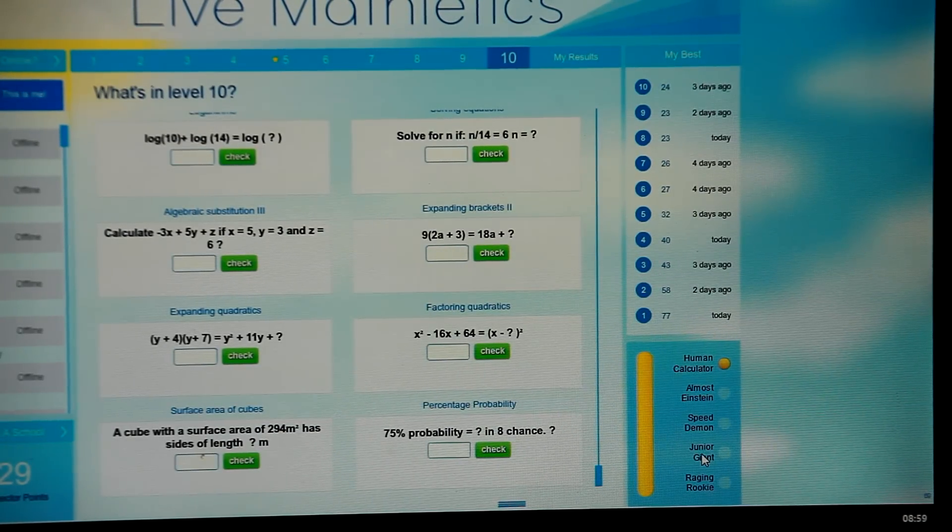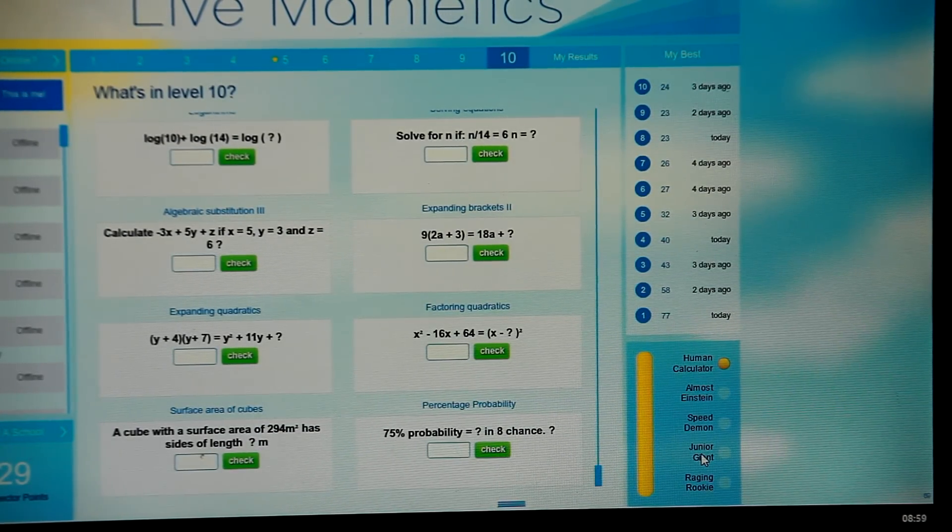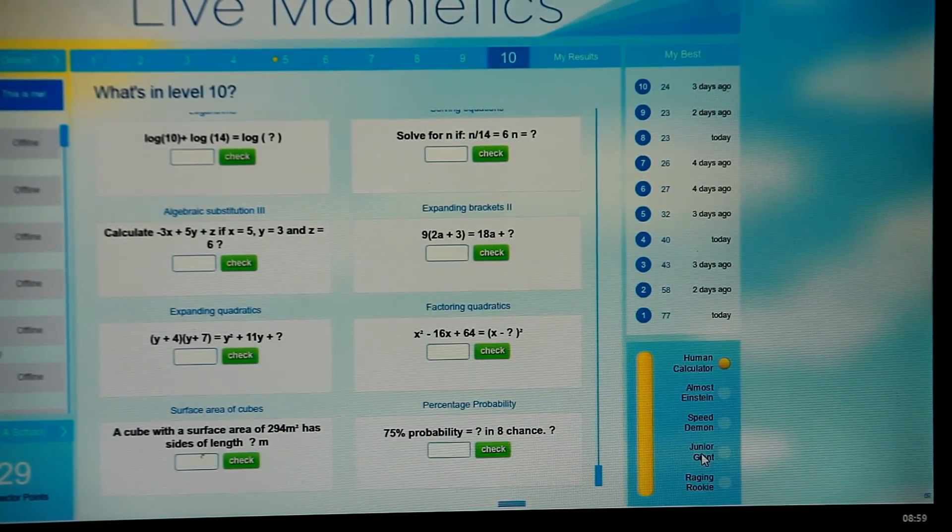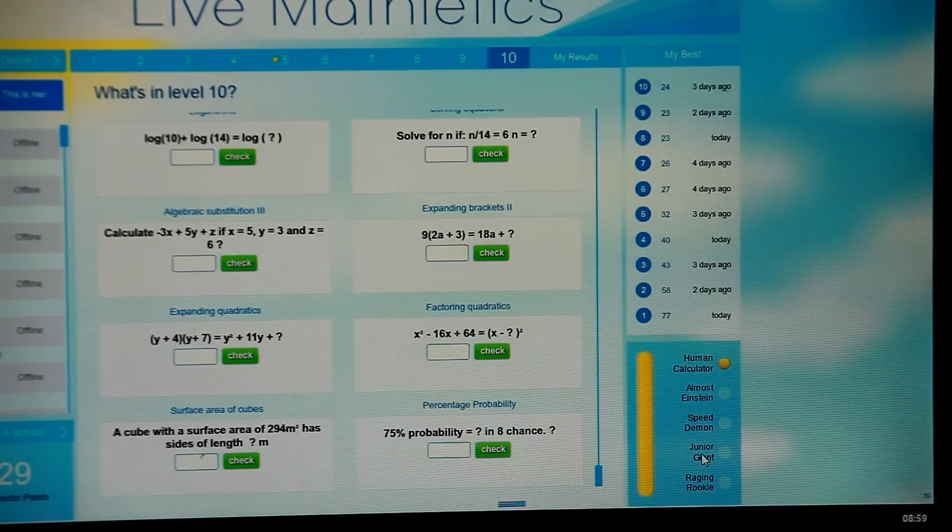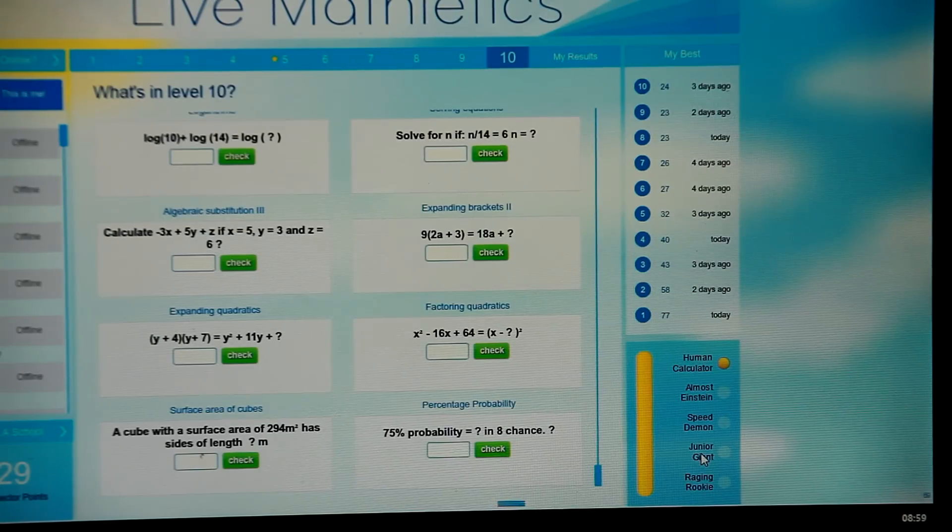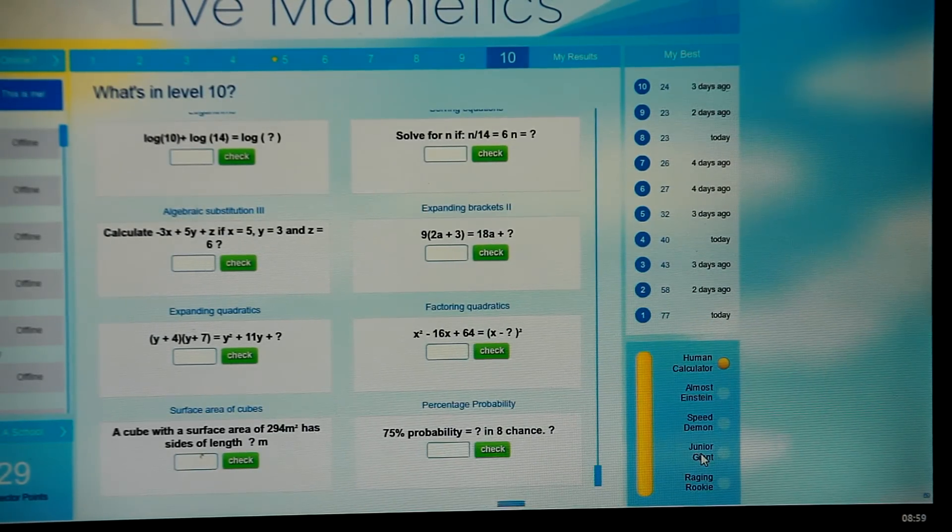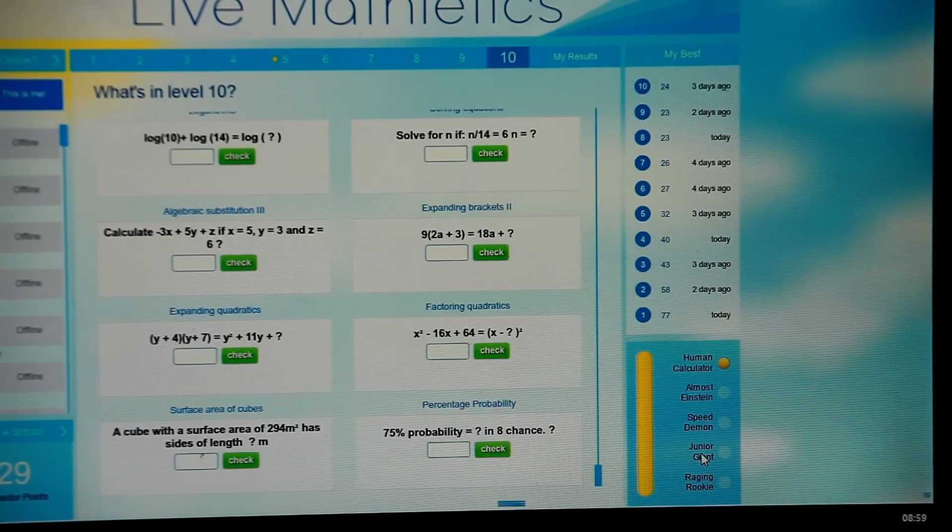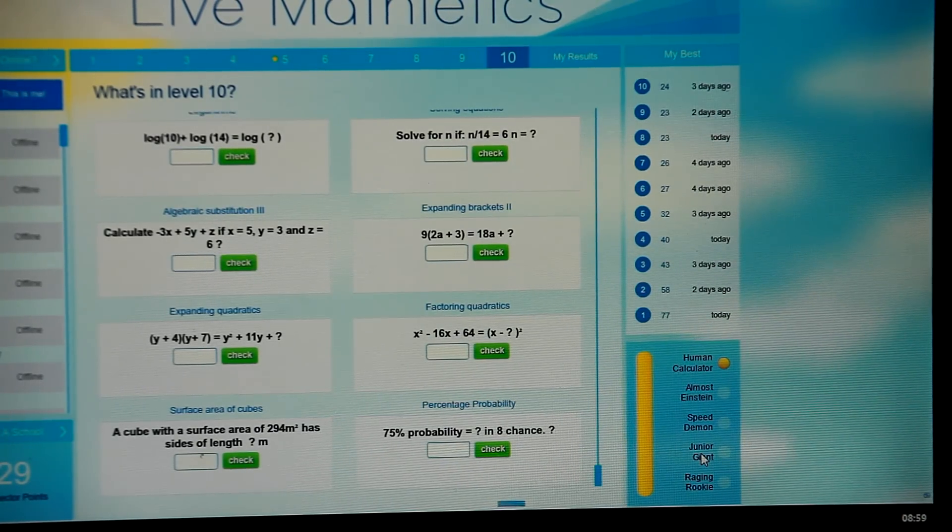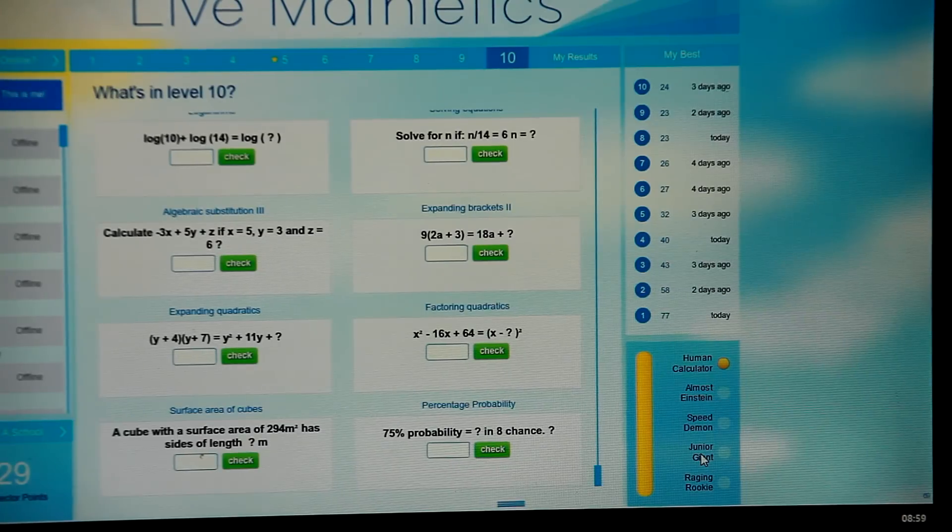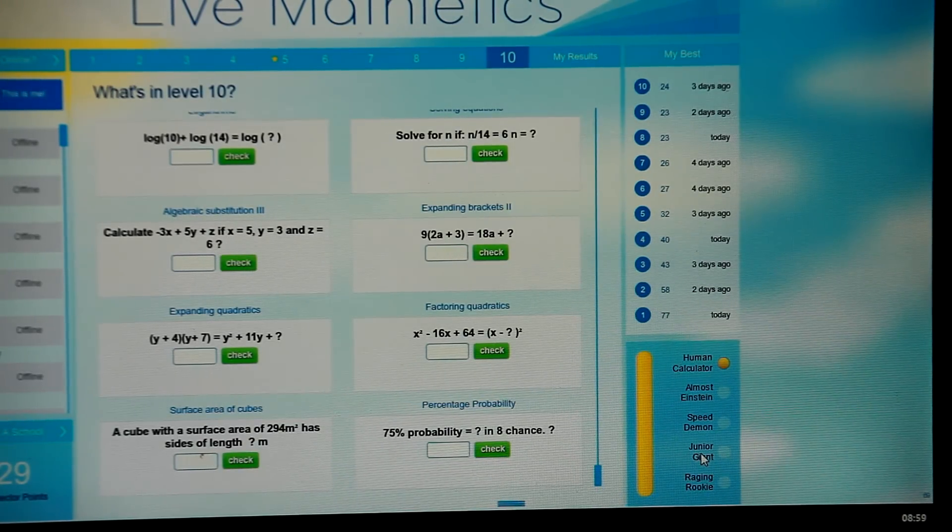You can buy that on eBay if you look up Ozbarg, O-Z-B-A-R-G, do an advanced search and look for the seller Ozbarg, and you can buy the high school or the primary school software quite cheaply, well under twenty dollars each, and you can use that for the rest of your high school. In particular, it's a good idea to get ahead there.